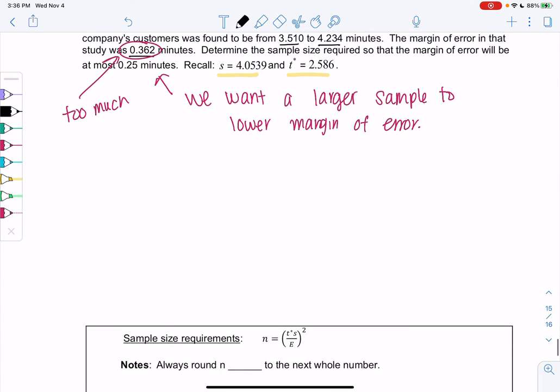Margin of error was the plus or minus piece in the formula. So that was T times S over root N. We'll say error E equals T times S over root N, and let's find a formula for sample size.